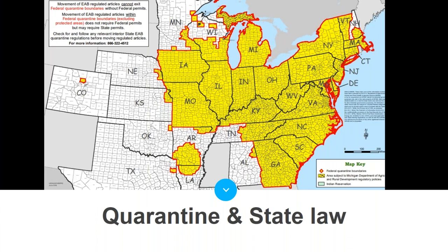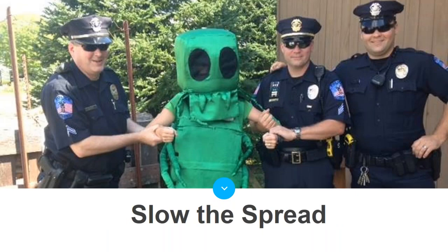Vermont adopted a statewide quarantine, joining the USDA's 31-state federal EAB boundary. This means all ash in Vermont are within the federal EAB boundary. The quarantine will help reduce movement of infested ash wood into uninfested regions — moving ash material outside the federal boundary to Maine, Rhode Island, or five counties in New Hampshire without a compliance agreement can result in penalties.